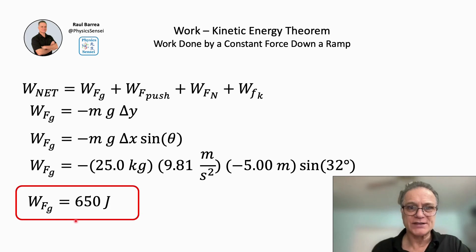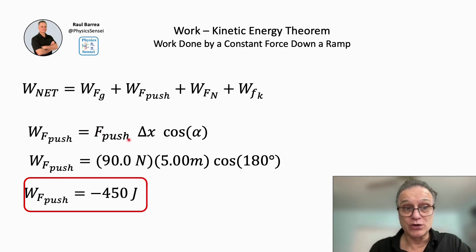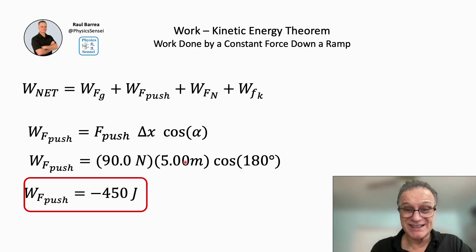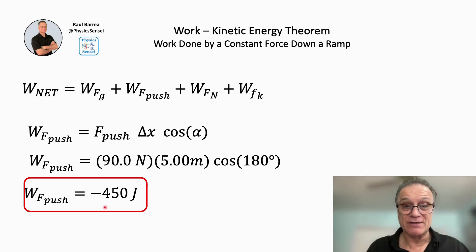Next, the work done by the push force. We use W = F·d·cos(θ). The push force points up the ramp at 90 newtons, and the displacement is 5 meters pointing down the ramp. The angle between them is 180°, and cos(180°) = −1. So the work done by the push force is negative 450 joules.